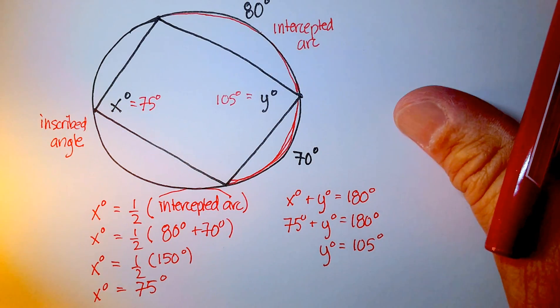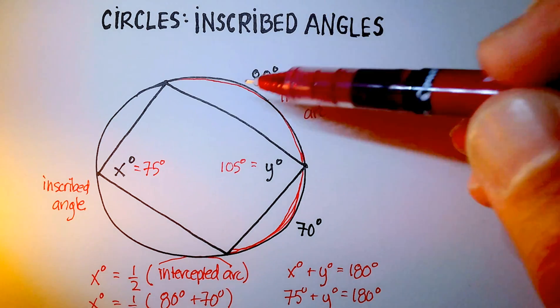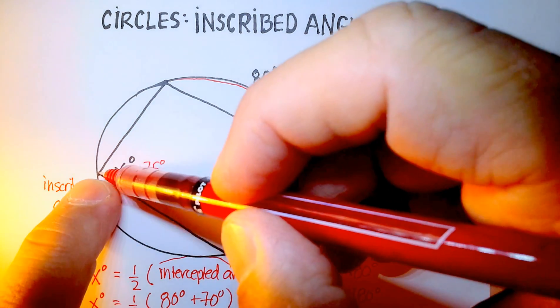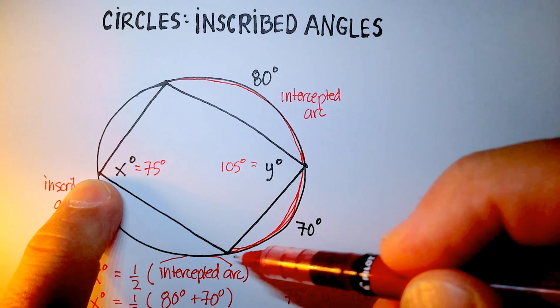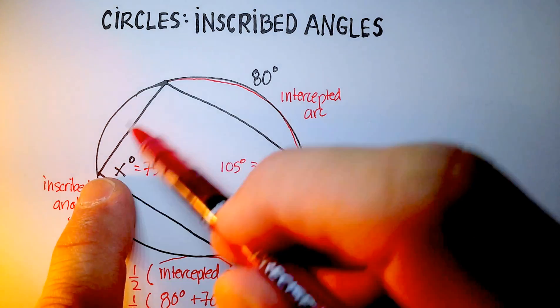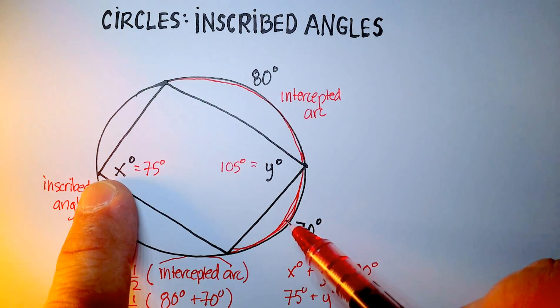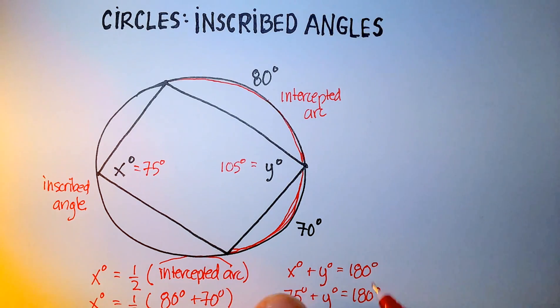So again, the two theorems that I want you to remember in this particular video are that an inscribed angle is going to be equal to one half of its intercepted arc, first theorem. Second theorem, that in an inscribed quadrilateral, opposite angles are supplementary, which means that they equal 180 degrees. Okay, I hope that was helpful.